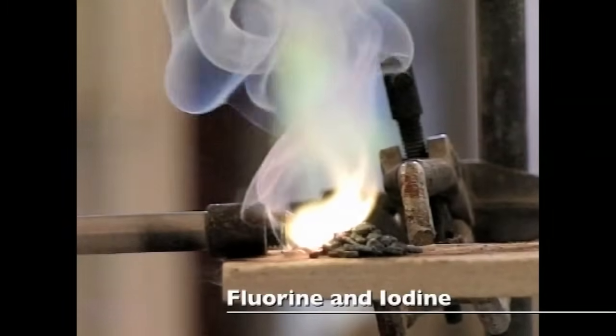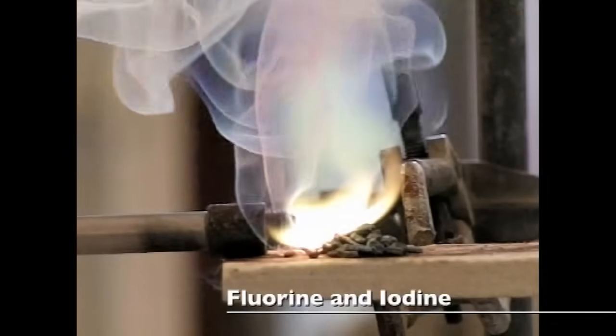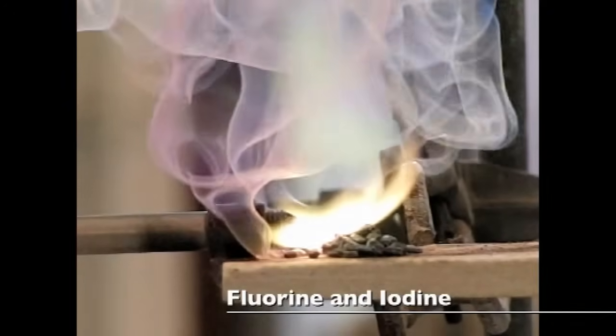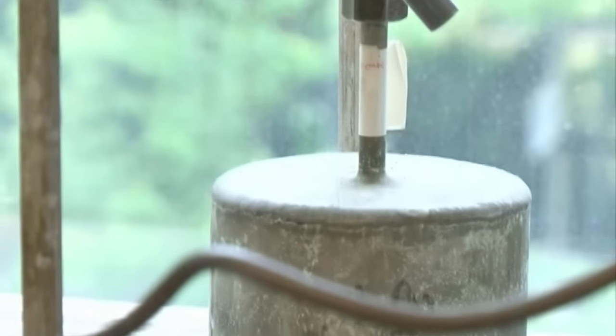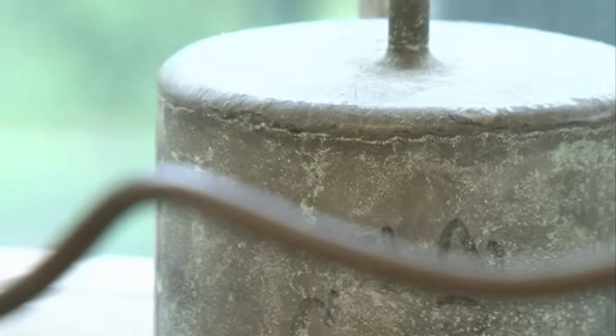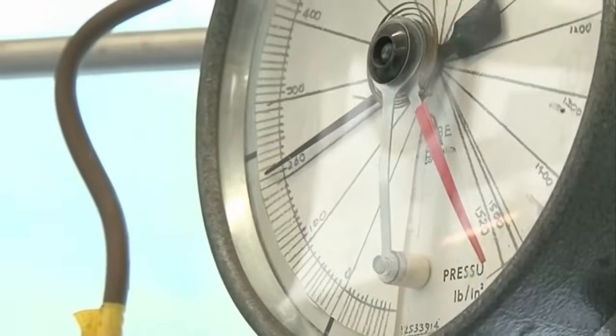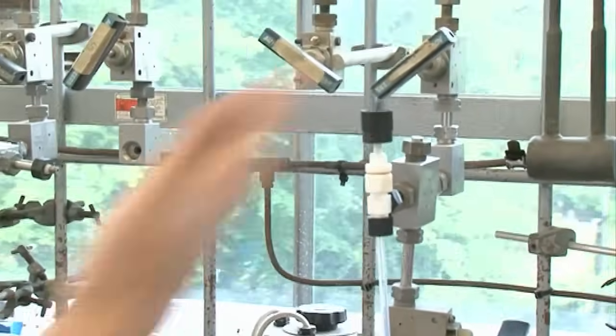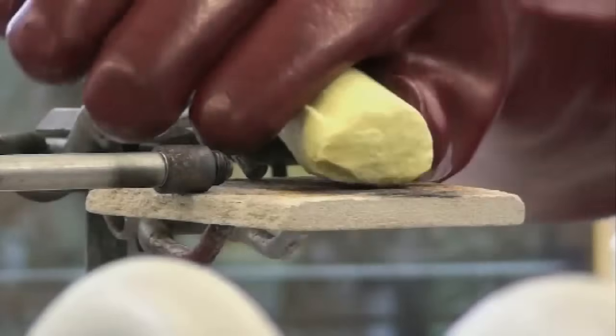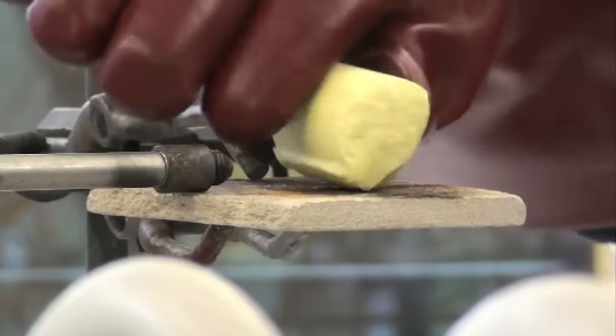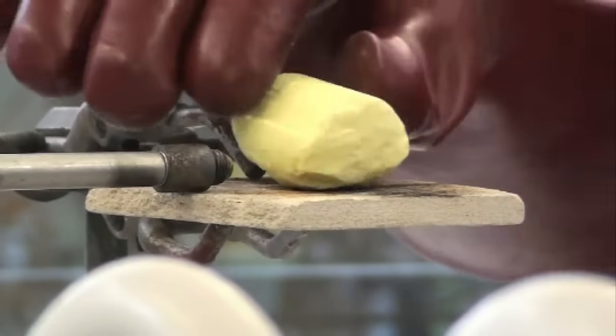And the hydrogen fluoride just eats through the glass. So you need to use equipment made out of metal, usually nickel. And the fluorine reacts with the surface of the nickel the first time you use it. And then you get a layer on the surface that protects the rest of the metal. So this is again fluorine with sulphur. So you can oxidise the sulphur probably to sulphur tetrafluoride or sulphur hexafluoride.